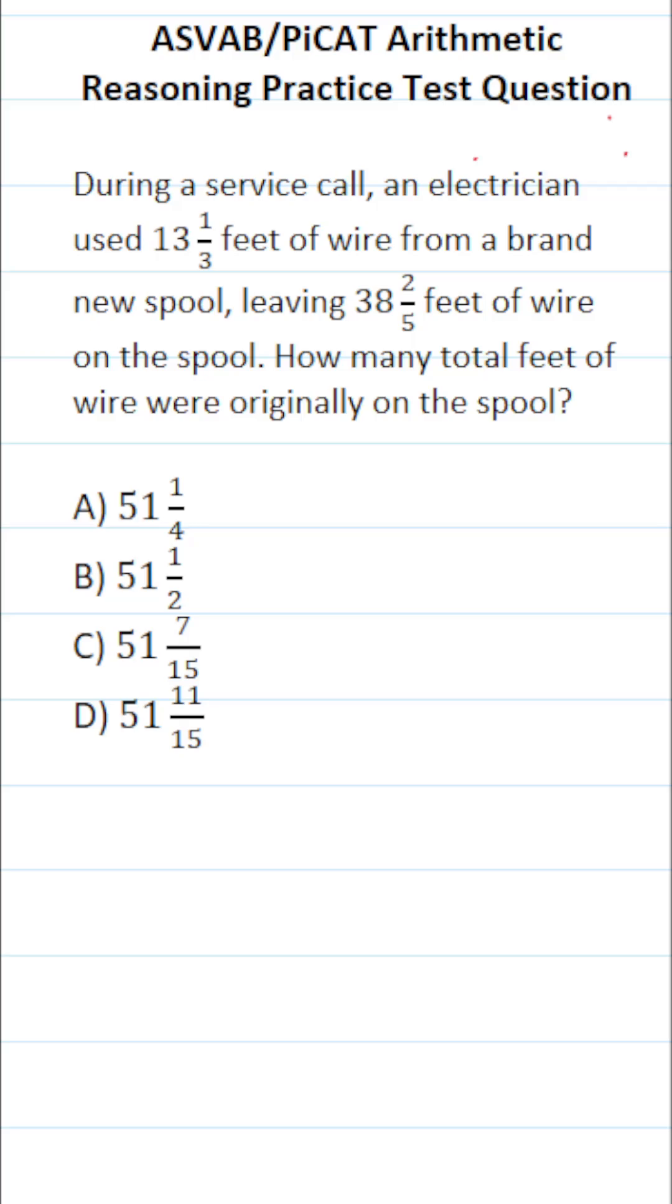So to figure this one out, we're simply going to do 13 and one-third plus 38 and two-fifths. Whenever you have to add mixed numbers, the easiest thing to do is to take your whole numbers, notably 38 and 13, and add those separately.